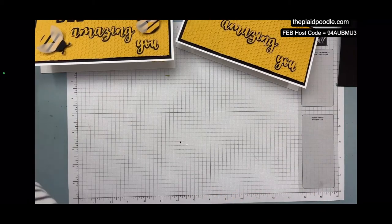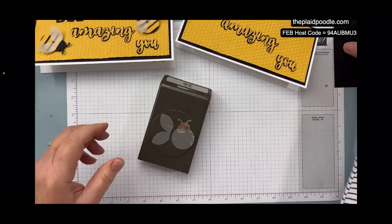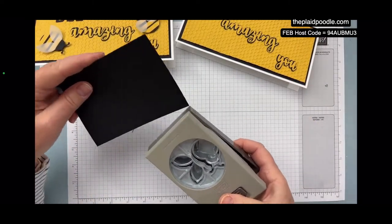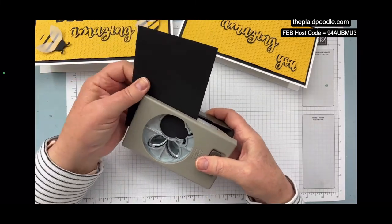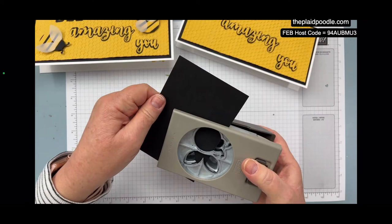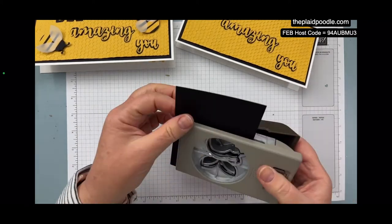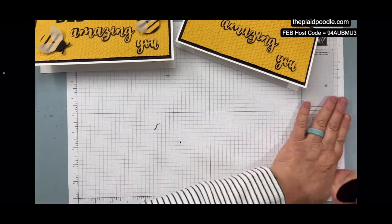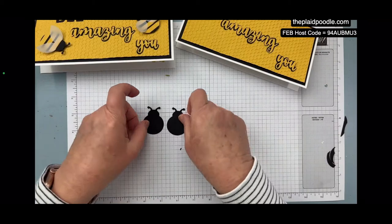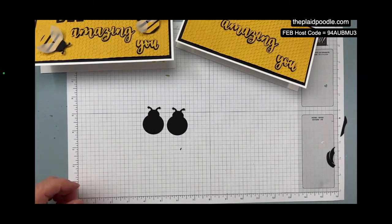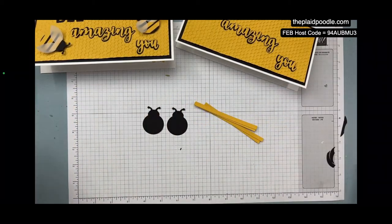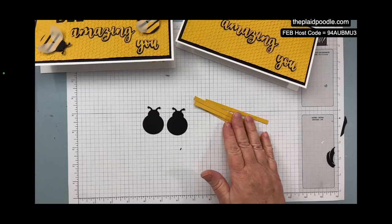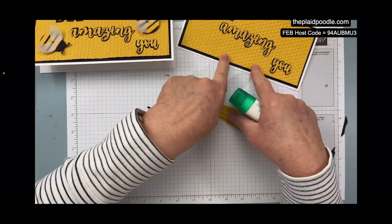So I'm going to use my punch and some black cardstock. And I'm going to cut two of these little ladybugs out. And then I've cut six—probably overkilled it on these strips.